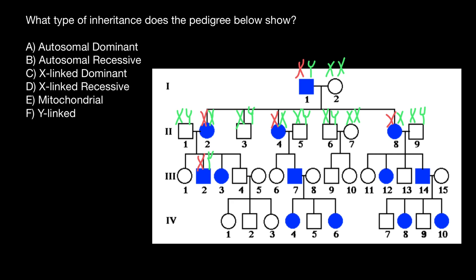This other male got the normal X chromosome from the mother's side and the normal Y chromosome from the father's side. This female got the normal X chromosome from the mother's side and the normal X chromosome from the father's side. As for female number three, she got the defective X chromosome from the mother's side and the normal X chromosome from the father's side — that is her genotype. And in this couple, the female got the normal X chromosome from her mother and from the father's side, while this son got the defective X chromosome from the mother's side and the normal Y chromosome from the father's side.